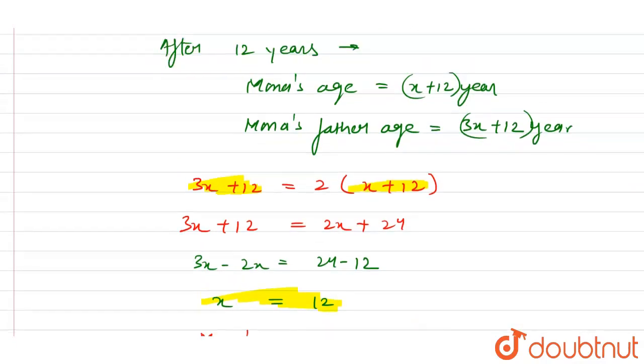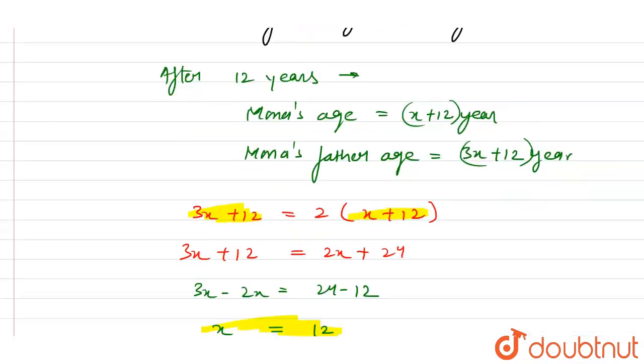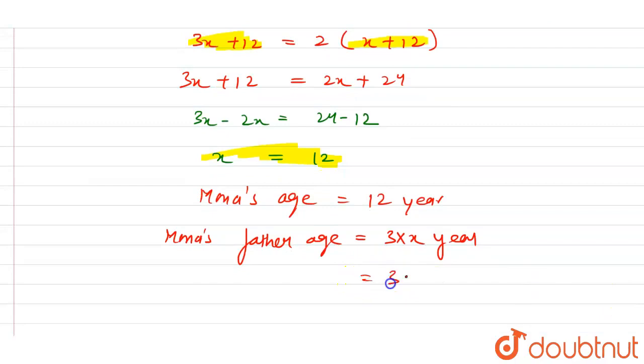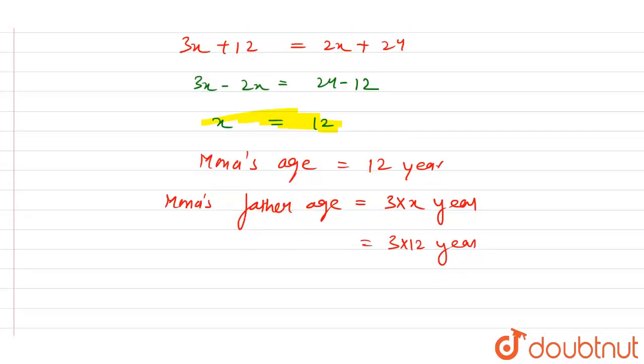Now her father's age will be 3x. So Mona's father age equals 3 times x, which equals 3 times 12 years, which equals 36 years. So the age of Mona is 12 years and the age of Mona's father is 36 years.